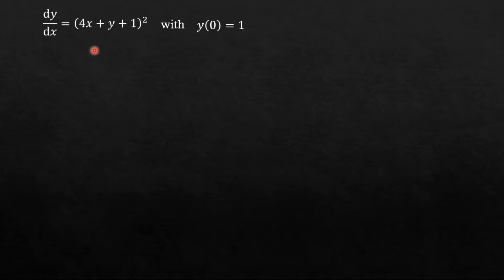Now to make this equation simple, let us assume 4x plus y plus 1 is equal to z. Here z is the new variable.